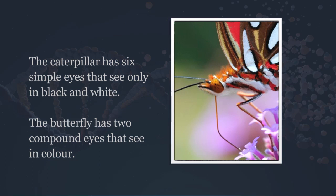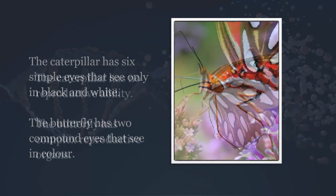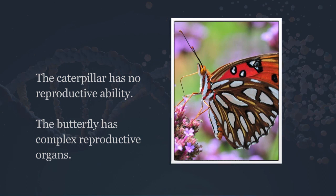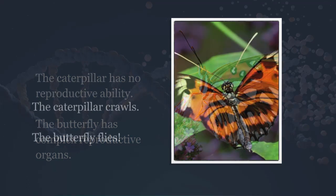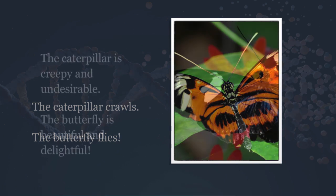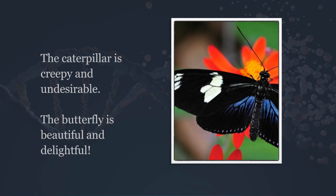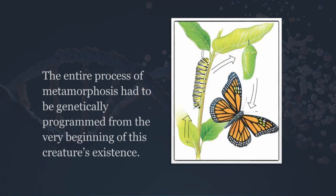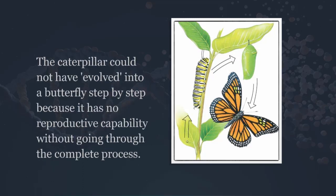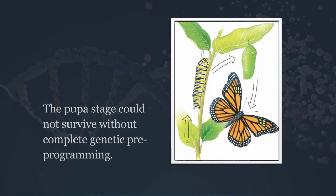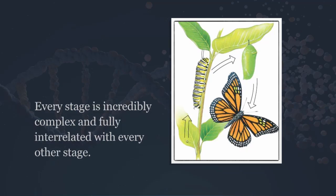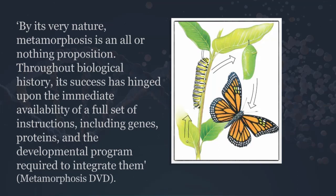The caterpillar has no reproductive ability; the butterfly has complex reproductive organs. The caterpillar crawls; the butterfly flies. The caterpillar is creepy and undesirable; the butterfly is beautiful and delightful. The entire process of metamorphosis had to be genetically programmed from the very beginning of this creature's existence. The caterpillar could not have evolved into a butterfly step by step because it has no reproductive capability without going through the complete process. The pupa stage could not survive without complete genetic pre-programming. Every stage is incredibly complex and fully interrelated with every other stage. By its very nature, metamorphosis is an all-or-nothing proposition.